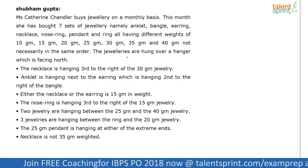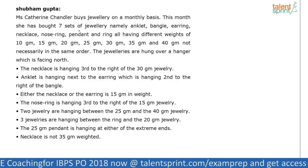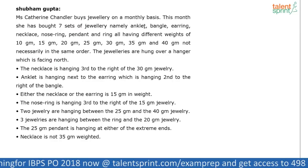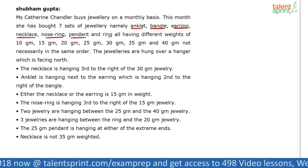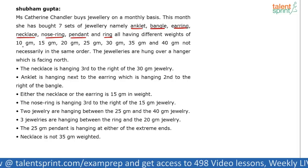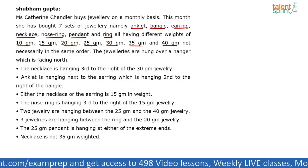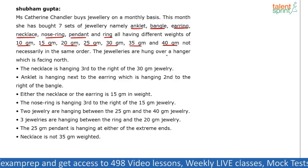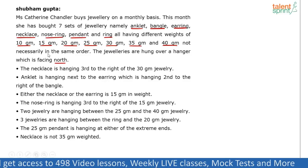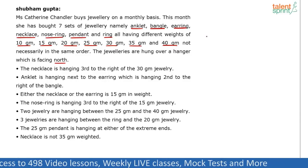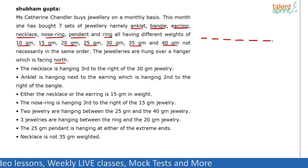The jewellery are hung over a hanger which is facing north. So basically 7 pieces of jewellery — anklet, bangle, earring, necklace, nose ring, pendant, and ring — with 7 different weights: 10, 15, 20, 25, 30, 35, 40, not necessarily in the same order. All of them are hung on a hanger facing north, so it is a linear arrangement with 7 positions: 1, 2, 3, 4, 5, 6, 7.